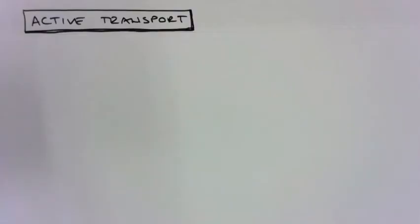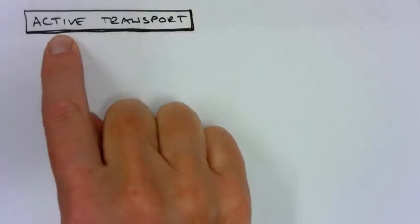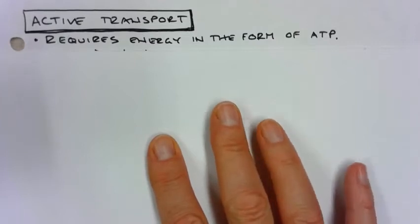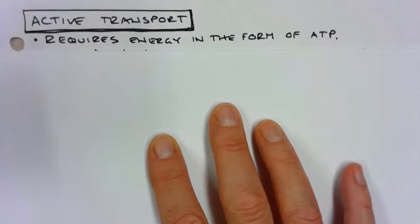The second type of transport is called active transport. And like the word active, it requires energy in order to operate. And we use the currency of ATP. ATP is like money for the cell.